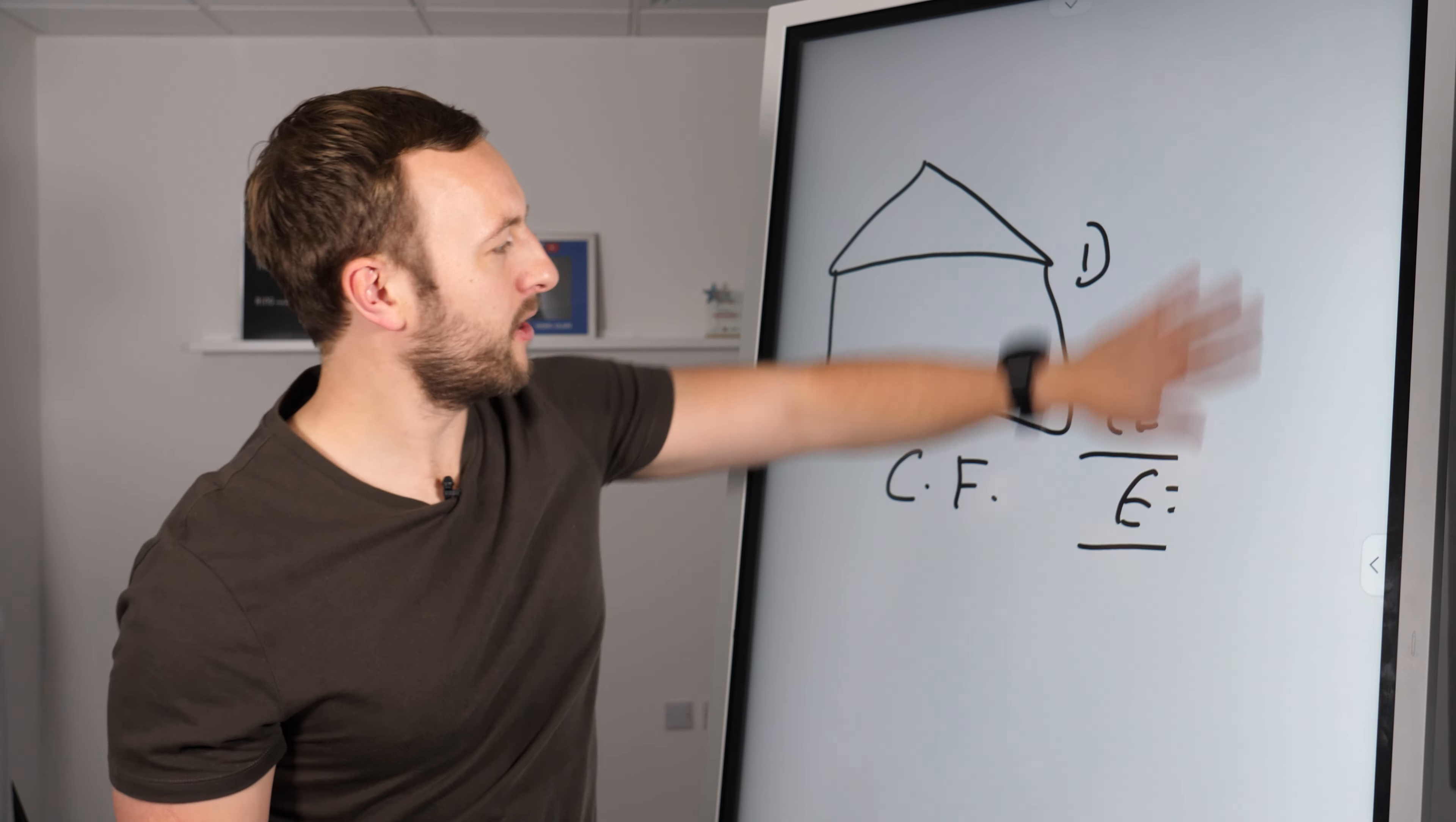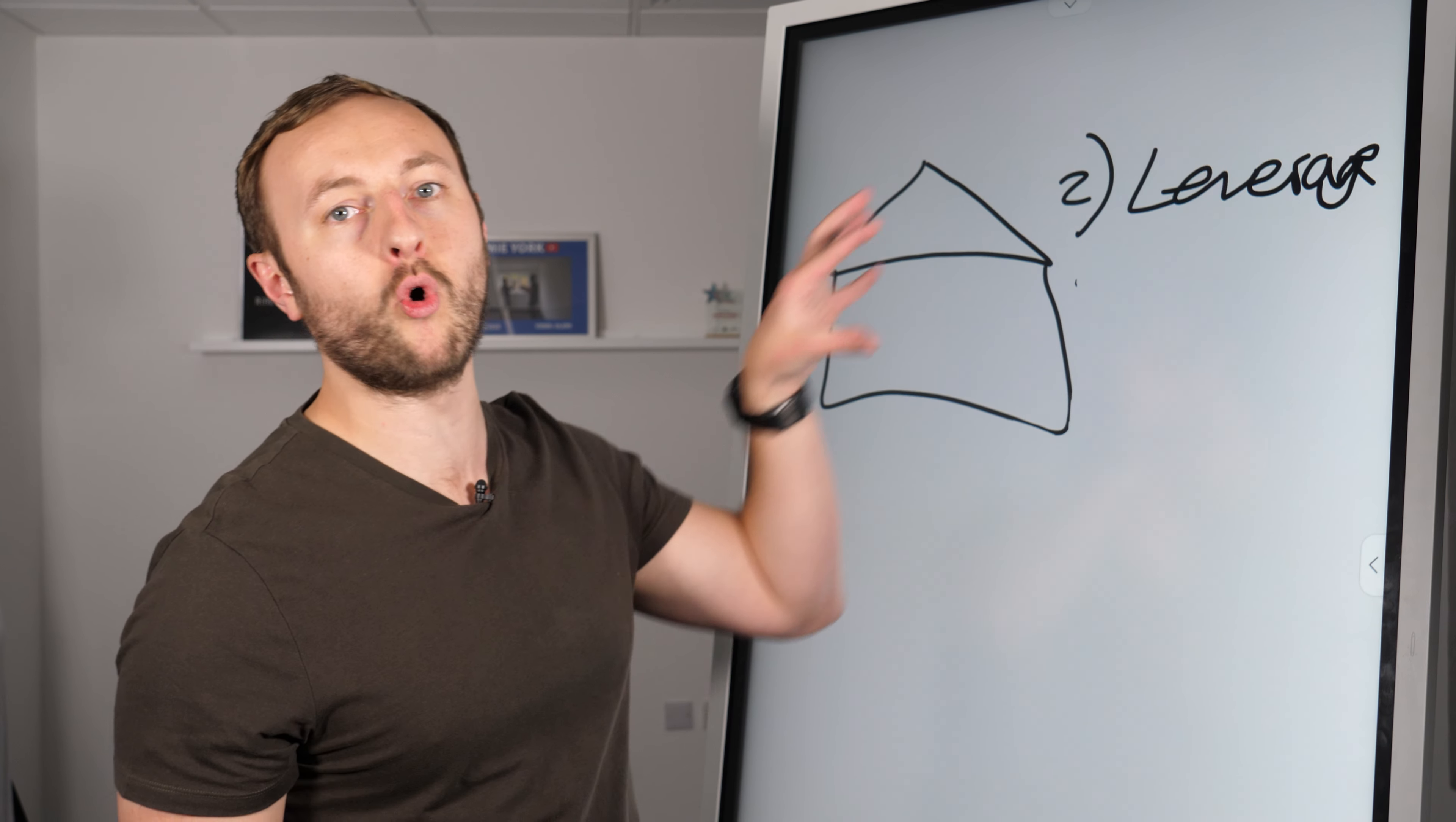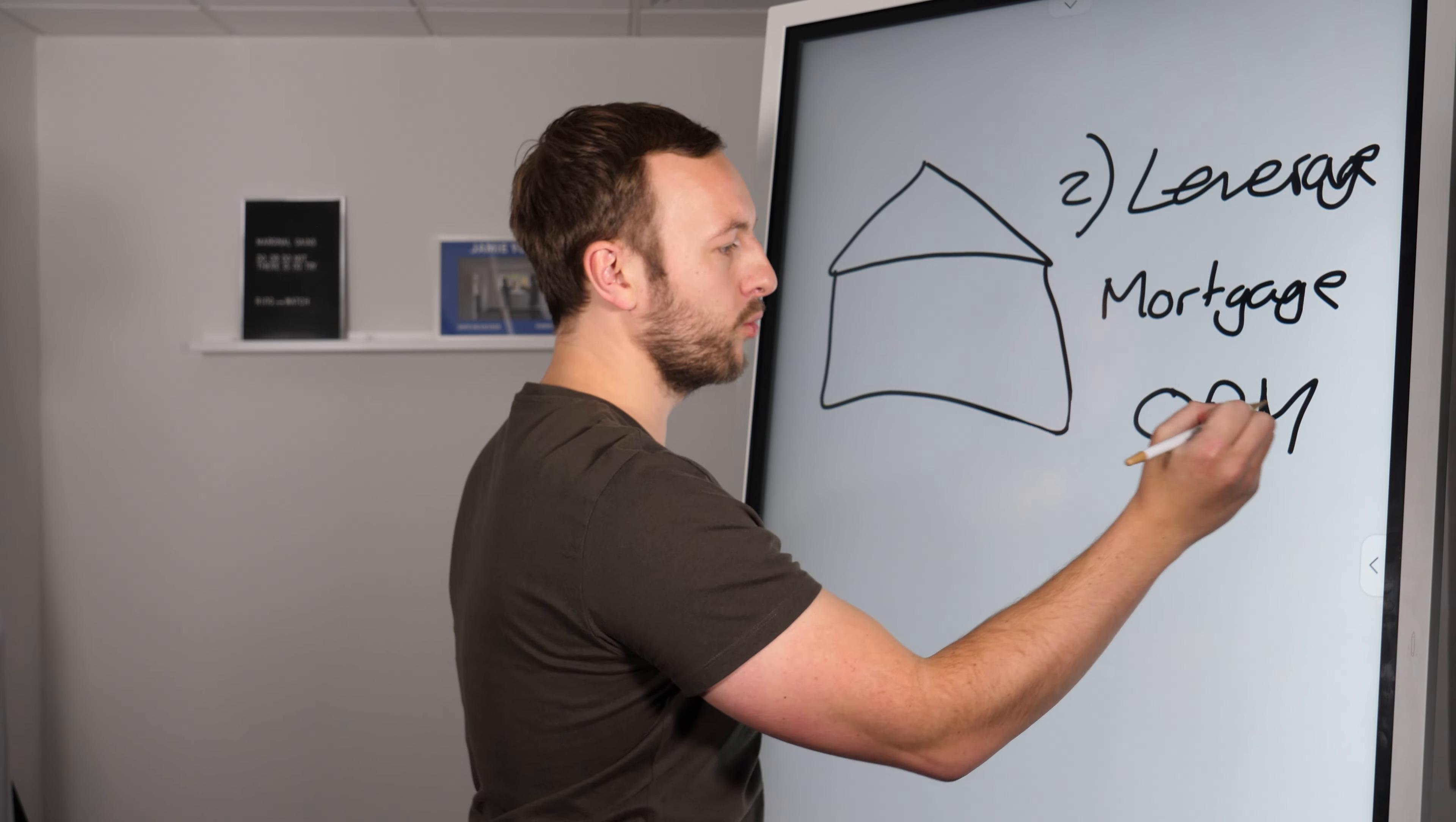Number two is, and I wasn't going to do this one as number two, but it'll make sense later, leverage. Leverage is a massive implicator for your money working harder for you. And leverage in property is mostly in a mortgage or OPM, other people's money.